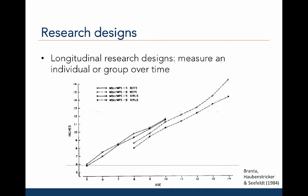In longitudinal design studies, we are interested in measuring an individual or groups of individuals across multiple time points. These are data from a study by Branta and colleagues in which 90 boys and 80 girls were tested longitudinally from ages 5 to 10, and a second group of 75 males and 65 females were tested longitudinally at ages 8 to 14. We notice a positive trend for both males and females, with very little difference between the sexes in younger children and a growing sex difference in older children. Because data are collected from the same individuals across time, we can conclude that mean vertical jump height changes with age across childhood and early adolescence.